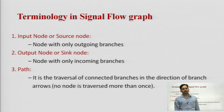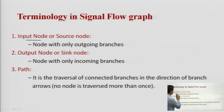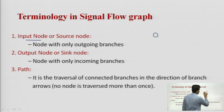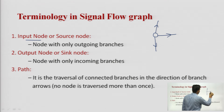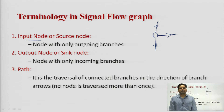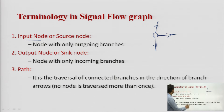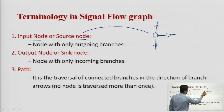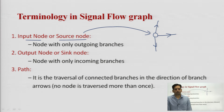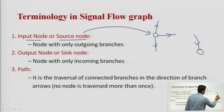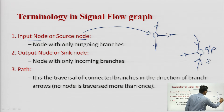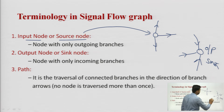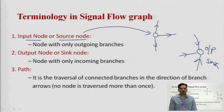Now we will see the basic terminology used in signal flow graph. First is the input node or source node. If we have a certain node from which all signals are going into the system — meaning it has all outgoing branches — we say this is acting as an input node or source node. Second is the output node or sink node. Whenever we have a node which is receiving all incoming branches, we say this is the output node or sink node, because all signals terminate at this node.